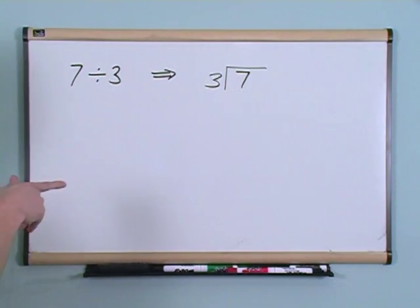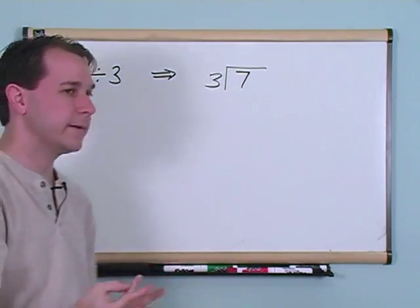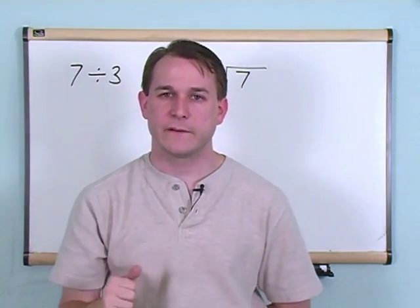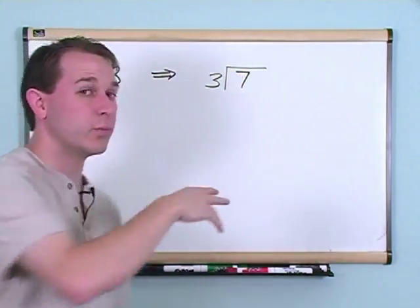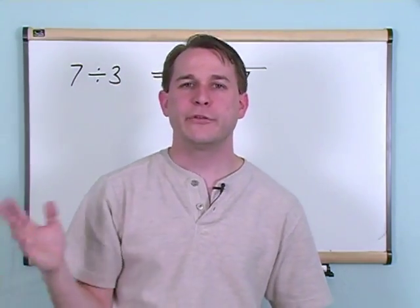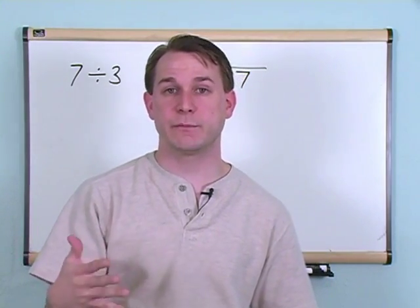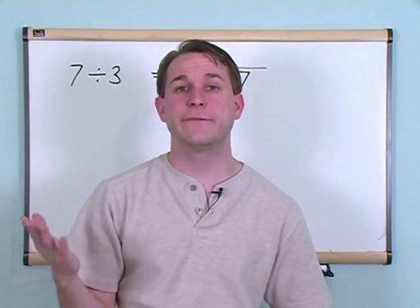How many times will three go into seven without spilling over? Three times two would give us six, and that's just under seven. Three times three would give us nine. Well, that's too many because I didn't even have nine to begin with. That's too many.